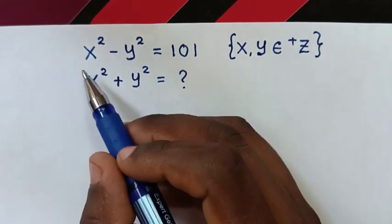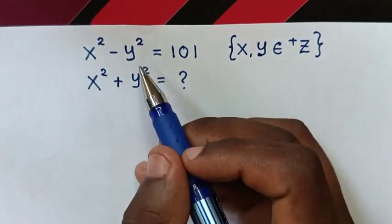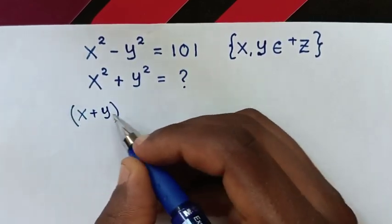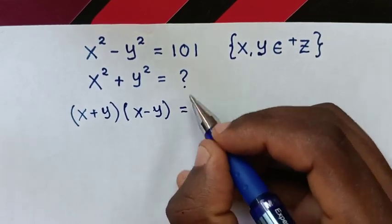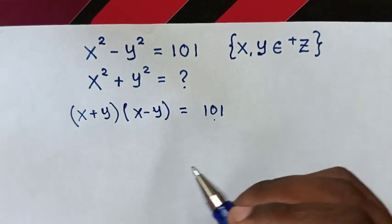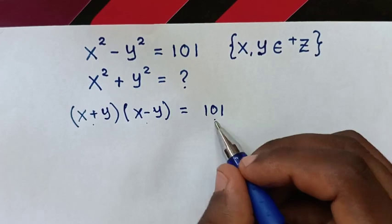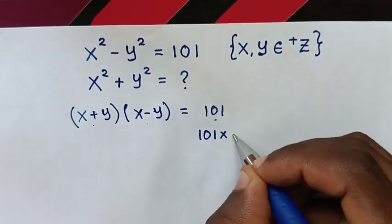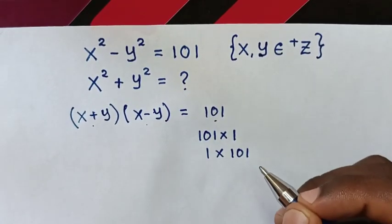From this equation, x squared minus y squared can be factored as (x+y)(x-y) equals 101. Now, 101 is a prime number, so the only way to express it as a product of positive integers is 101 times 1.